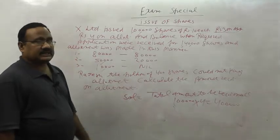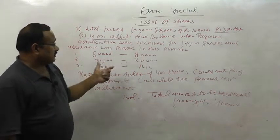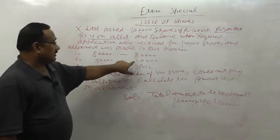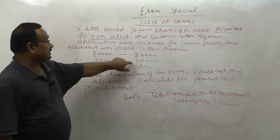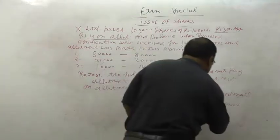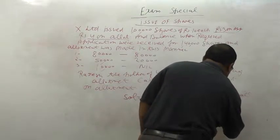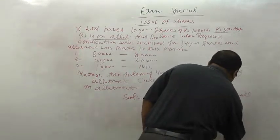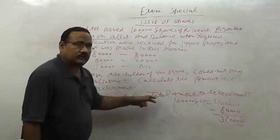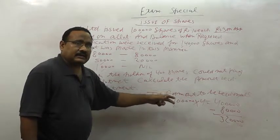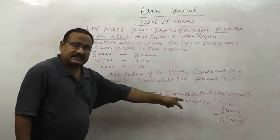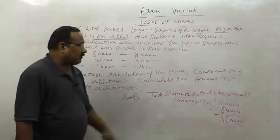So the total allotment amount is 4 lakhs. We adjust the carry forward amount of 80,000. From 4 lakhs we already have 80,000 received, so total to be received on allotment is 3 lakh 20,000. This is the straightforward solution. Total amount to receive is 4 lakhs minus 80,000 equals 3 lakh 20,000.